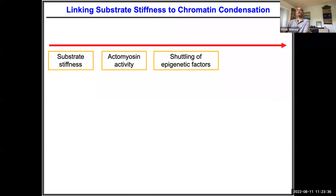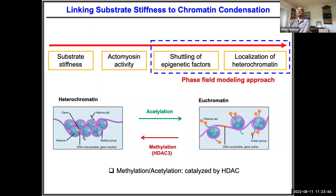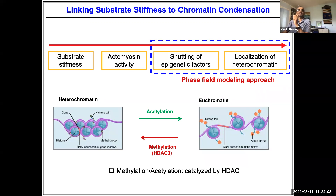We know that substrate stiffness changes actomyosin contractility, which changes the shuttling of epigenetic factors. Once you have HDAC in the nucleus, it can take your acetylated histones and make them methylated, so there is more condensation. What we want to do is predict the sizes of these lamina-associated domains by considering these processes.